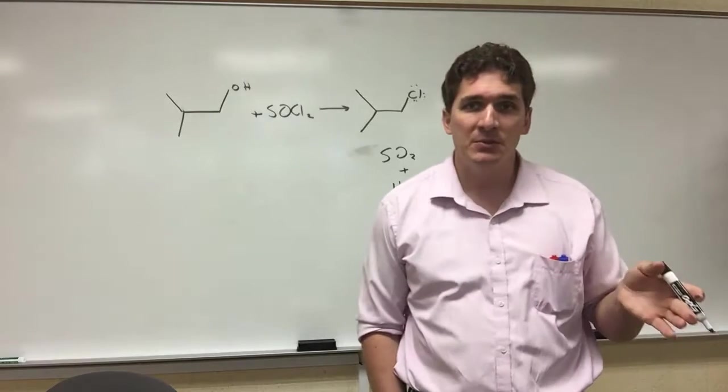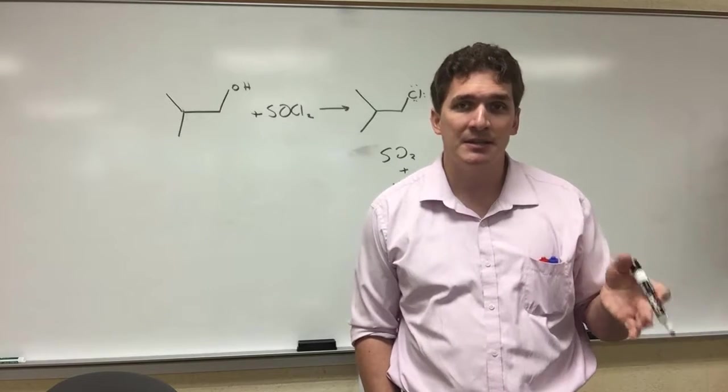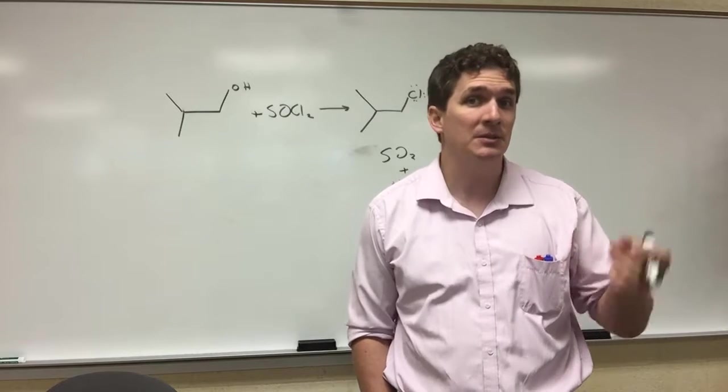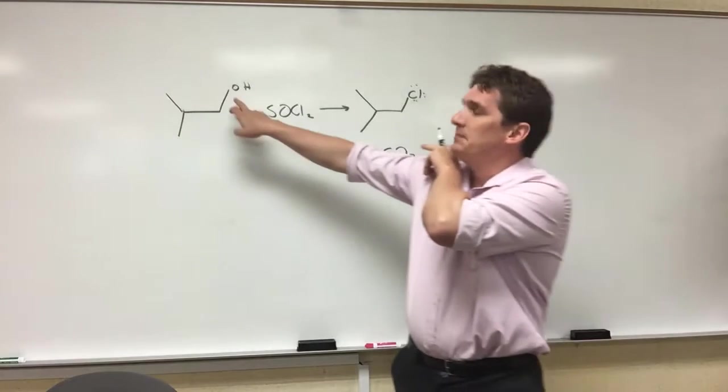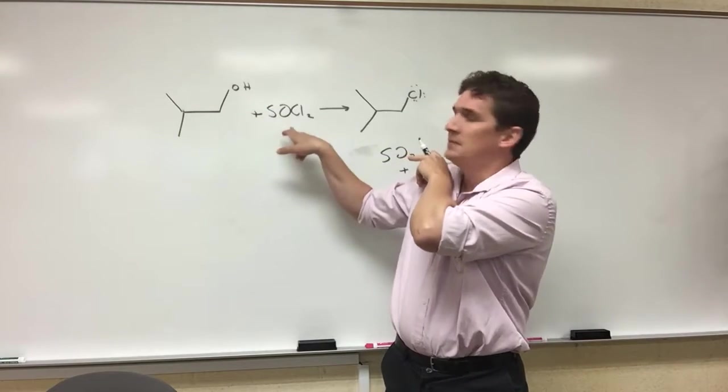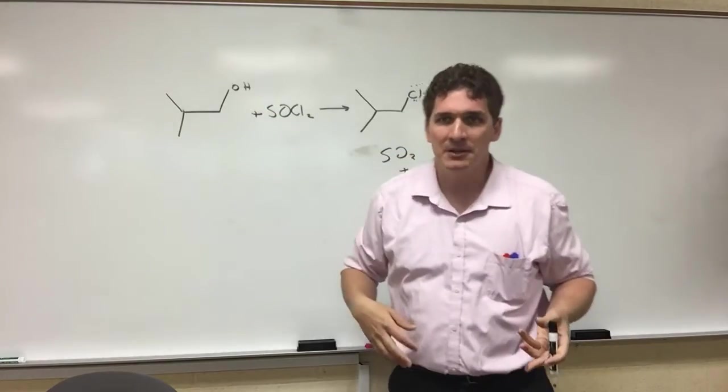But previous video we talked about using strong acids like HCl to replace the alcohols, but this really was only for tertiary and possibly secondary carbons. This is what you want to do if you want to replace the hydroxide group with a halogen and it's a primary alcohol.